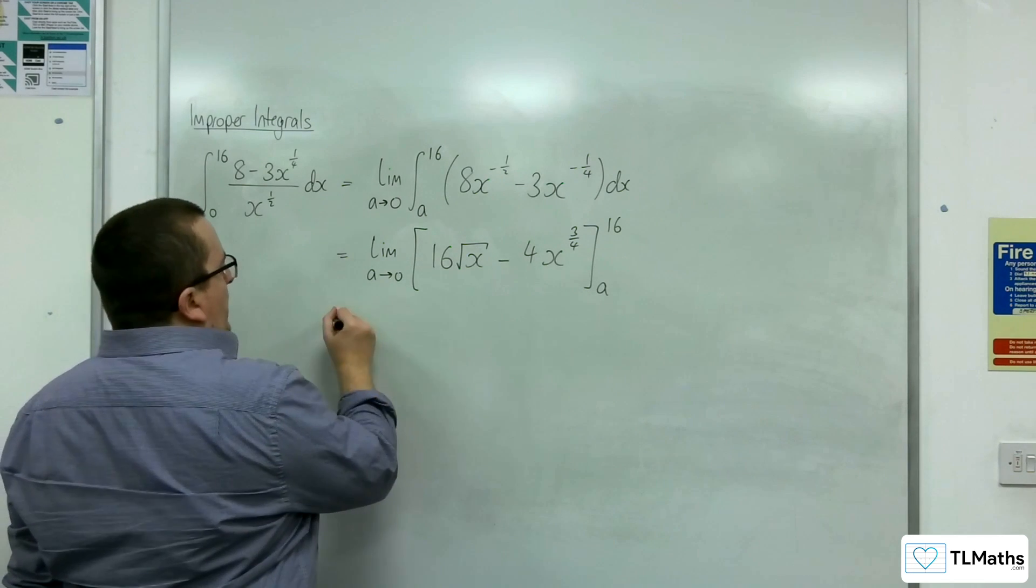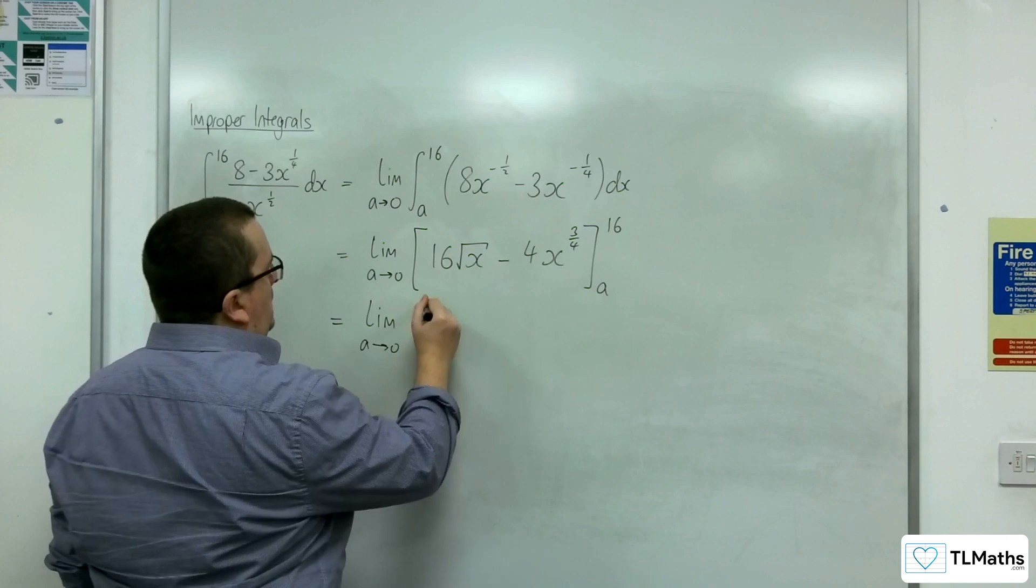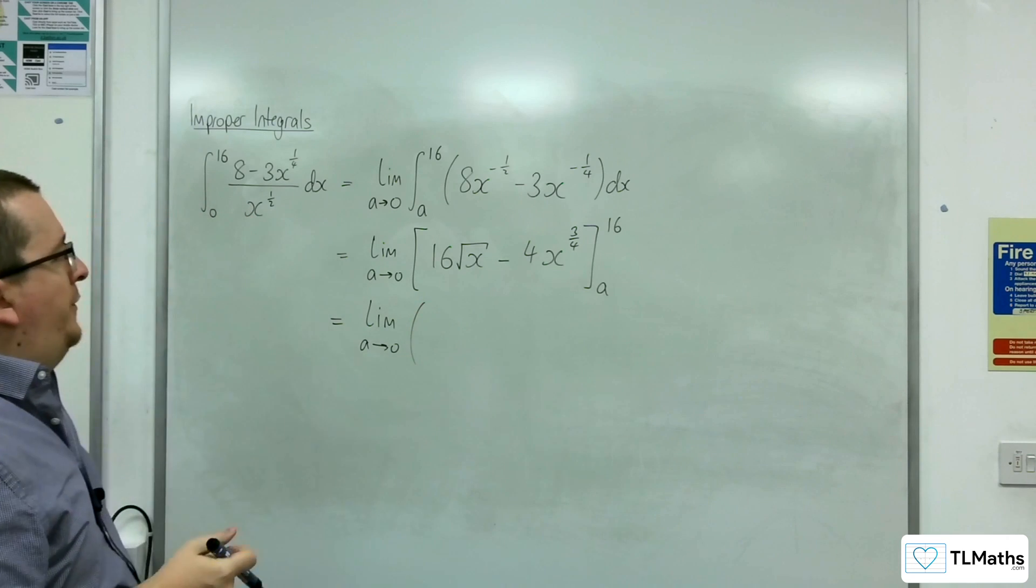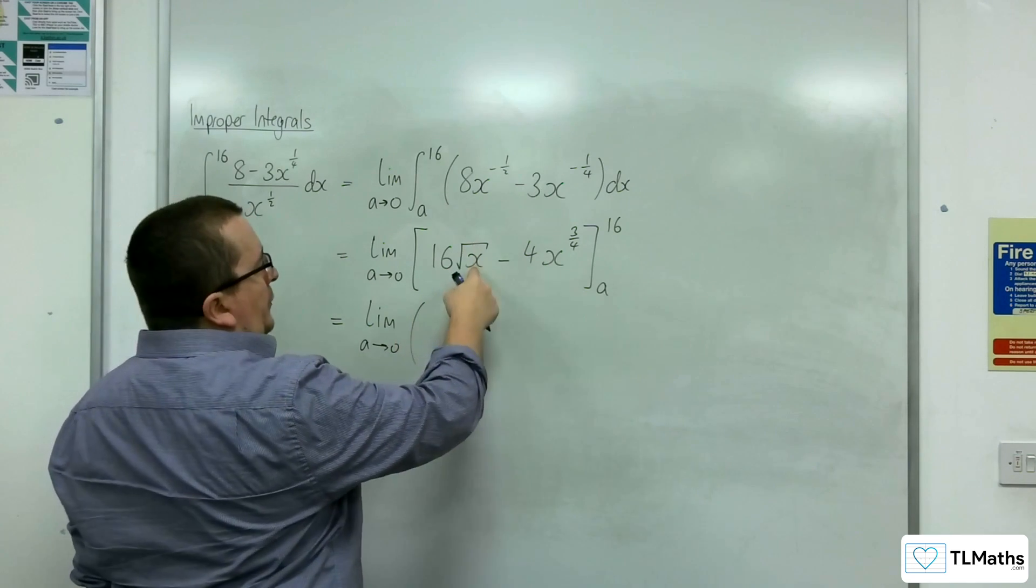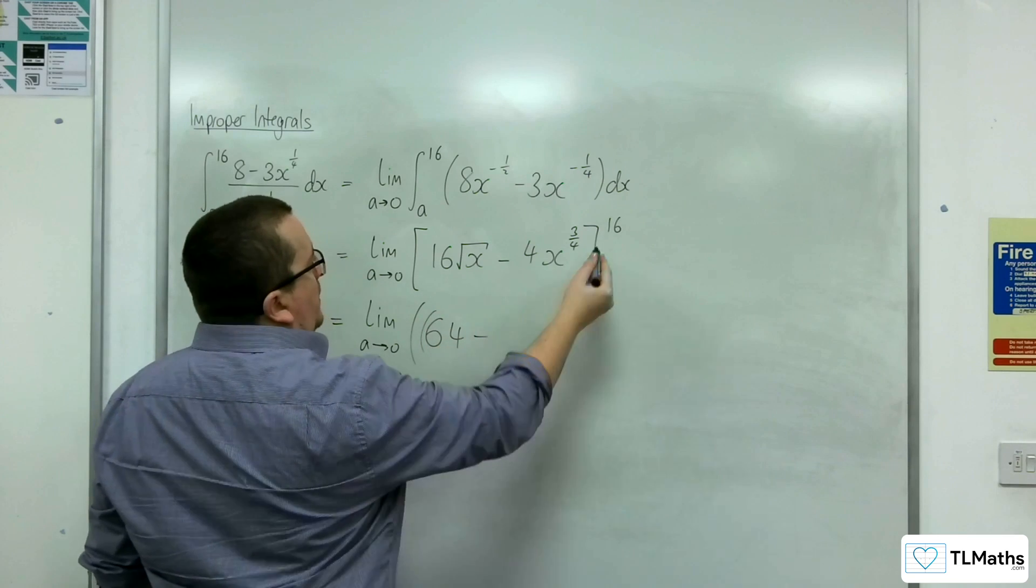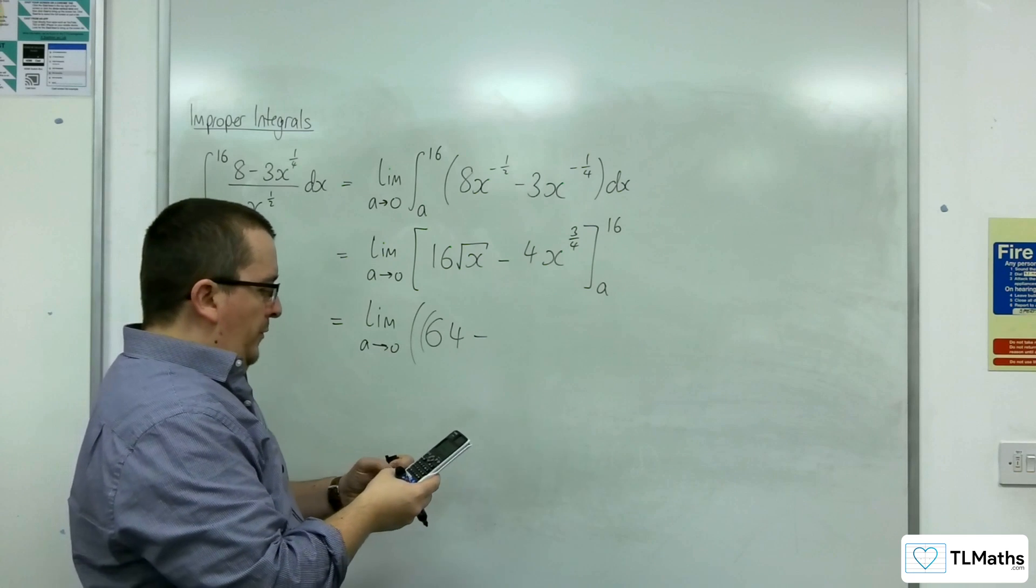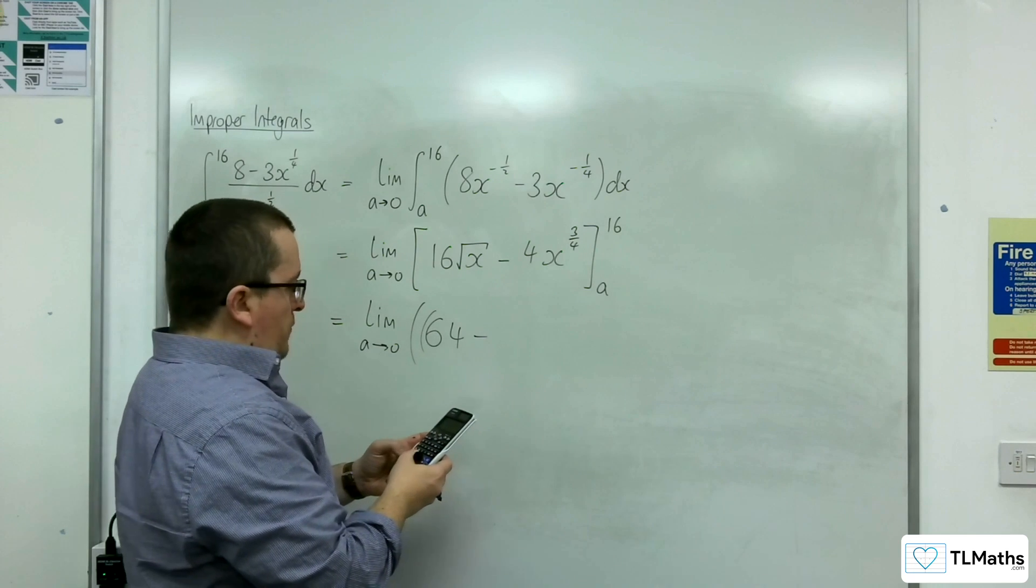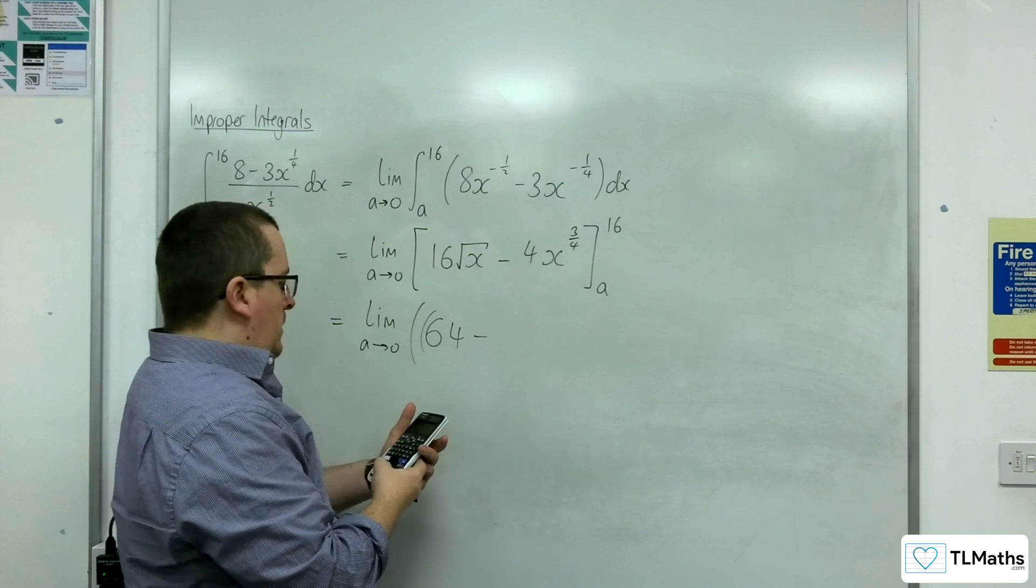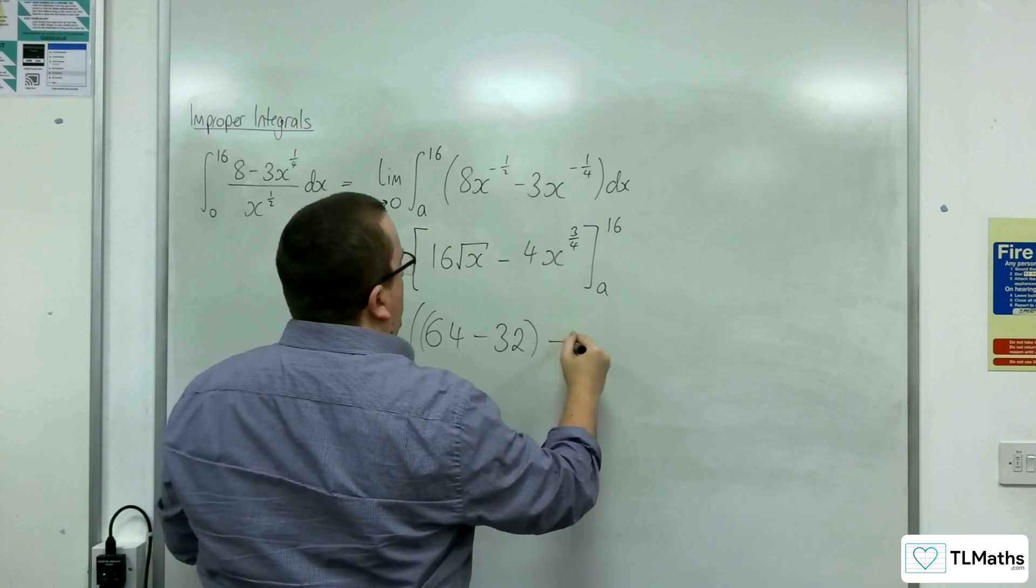So then I need to substitute the 16 of the a in. So substituting the 16, we're going to get 16 lots of 4, which is 64. Substituting the 16 into this, we've got 4 times 16 to the power of 3 quarters, gets us 32. So take away 32,